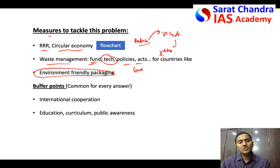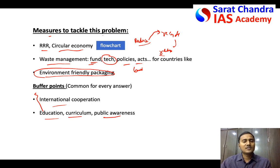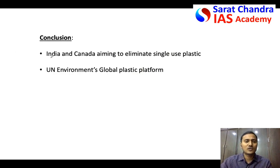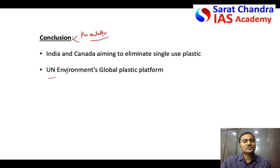In any UPSC answer there are buffer points you can write for almost every question — for example, international cooperation is required, different organizations should come together, education is required, public awareness should be increased, and plastic waste management should be included in school and college curricula. These buffer points are particularly helpful when you don't know the actual answer. Always conclude using two or three points that showcase your knowledge.